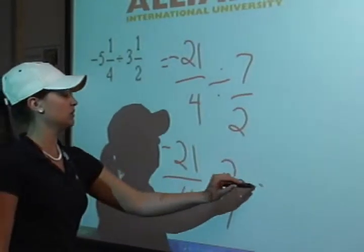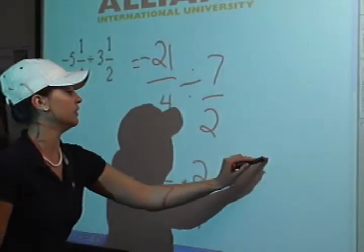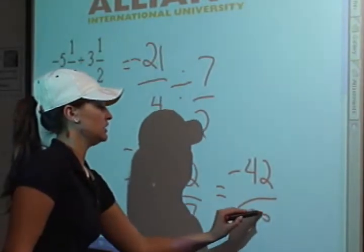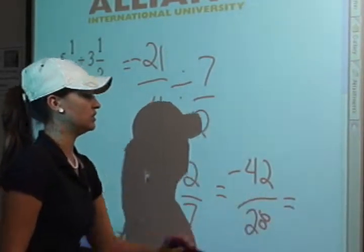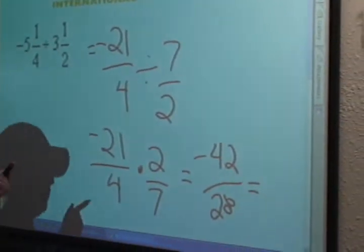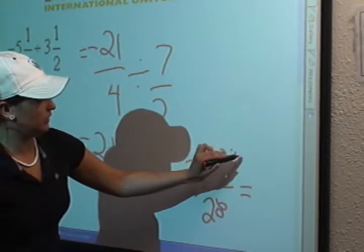Now we're going to multiply across equals negative 42 over 28. And we're going to reduce that. You can just divide it by 14. To reduce this we're going to divide by 14.